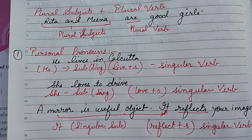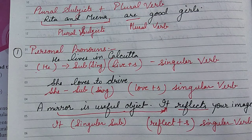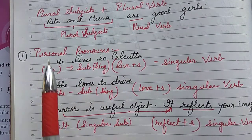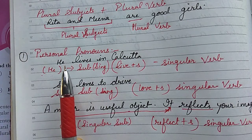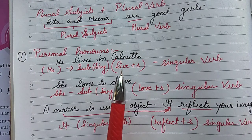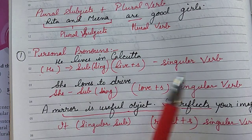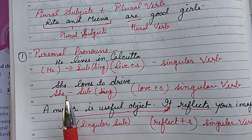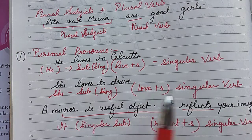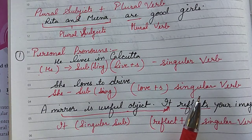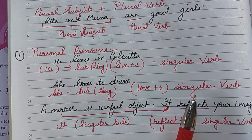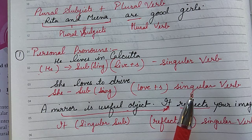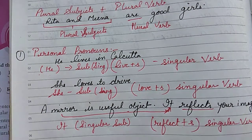When personal pronouns like he, she, or it are used, the verb takes a specific form. For example, 'He lives in Calcutta' — he is a singular subject, so we use 'live + s,' which is the singular verb. Similarly, 'She loves to drive' — she is a singular subject, and 'love + s' becomes the singular verb. When a verb is added with 's,' it becomes singular; without 's,' it is plural.